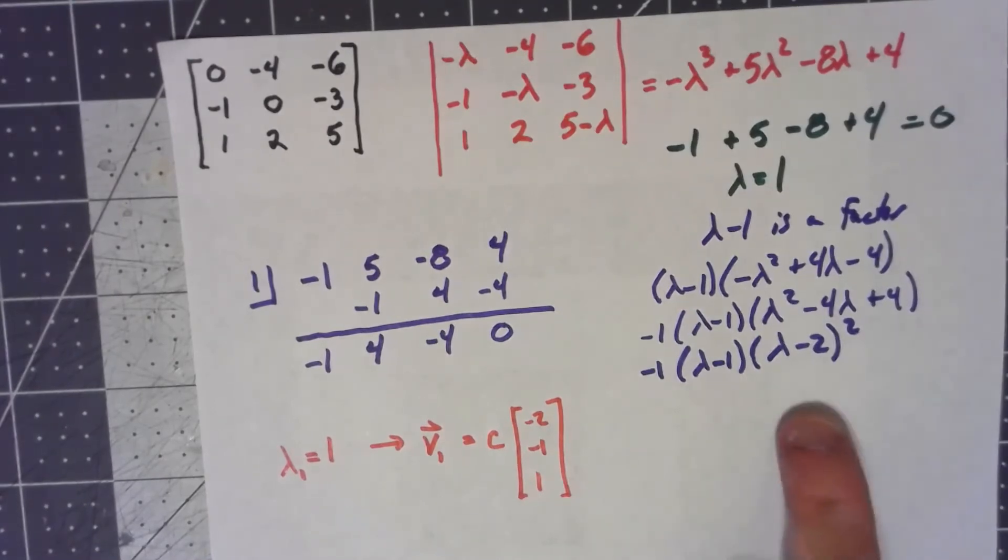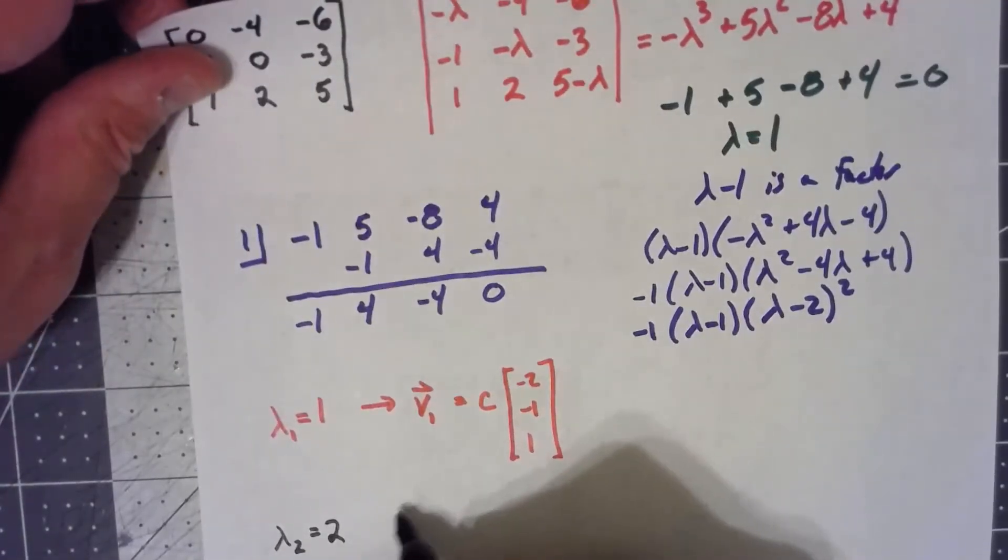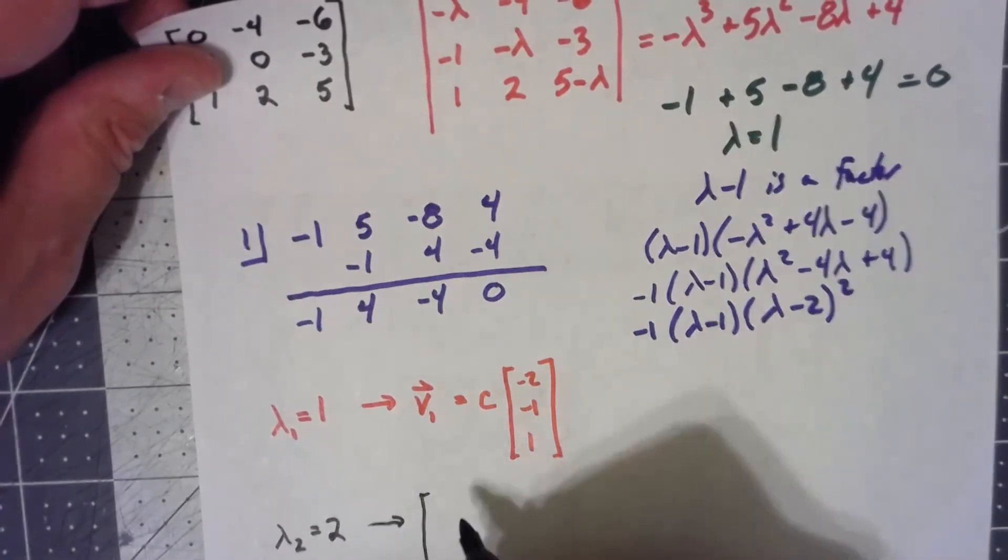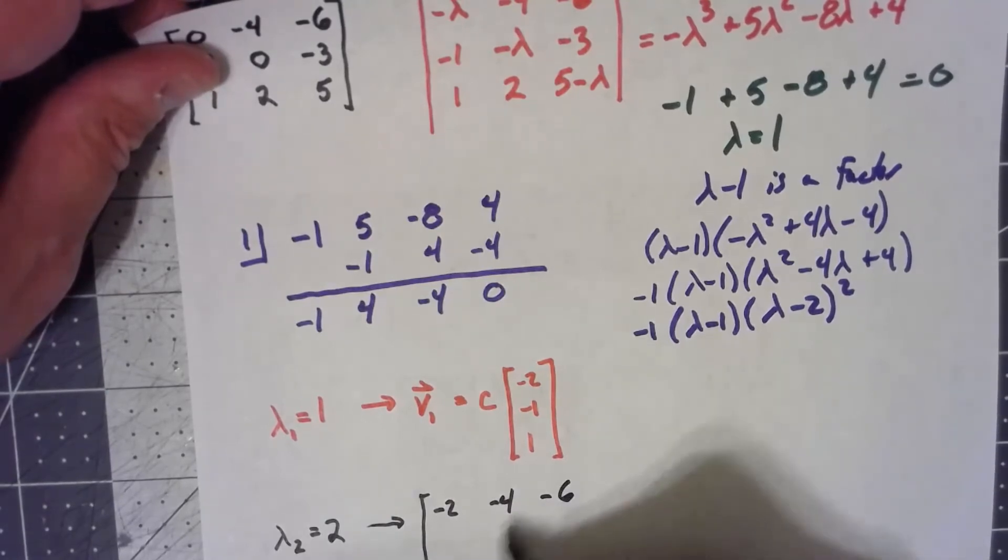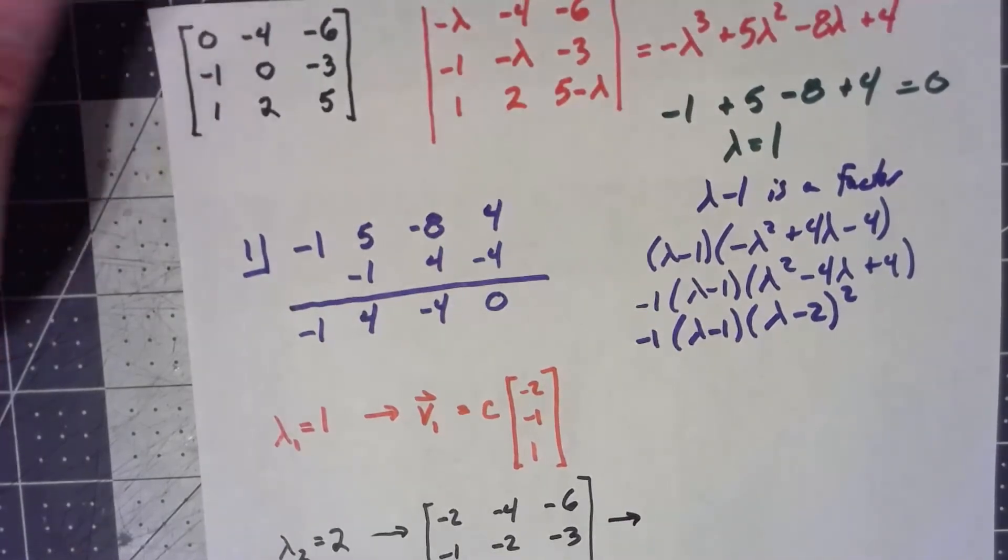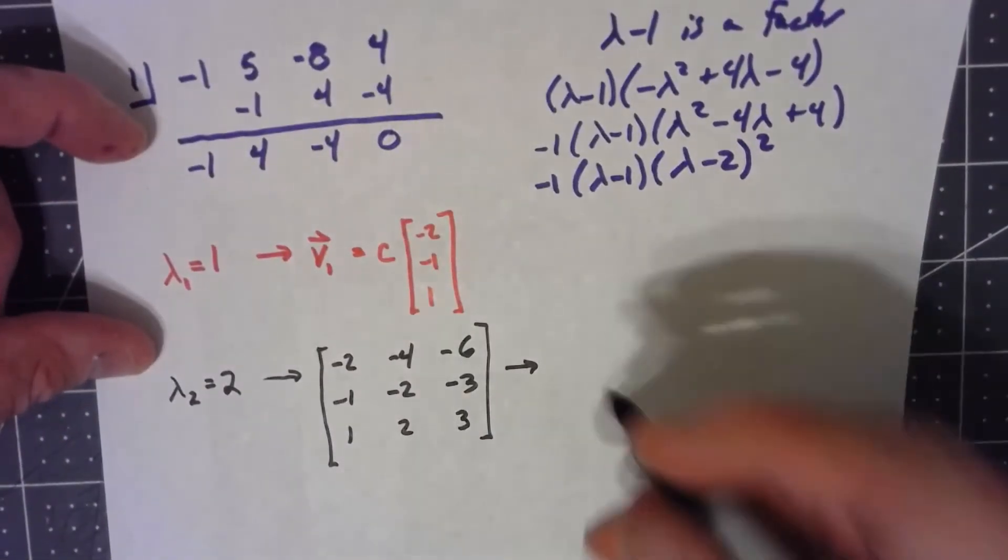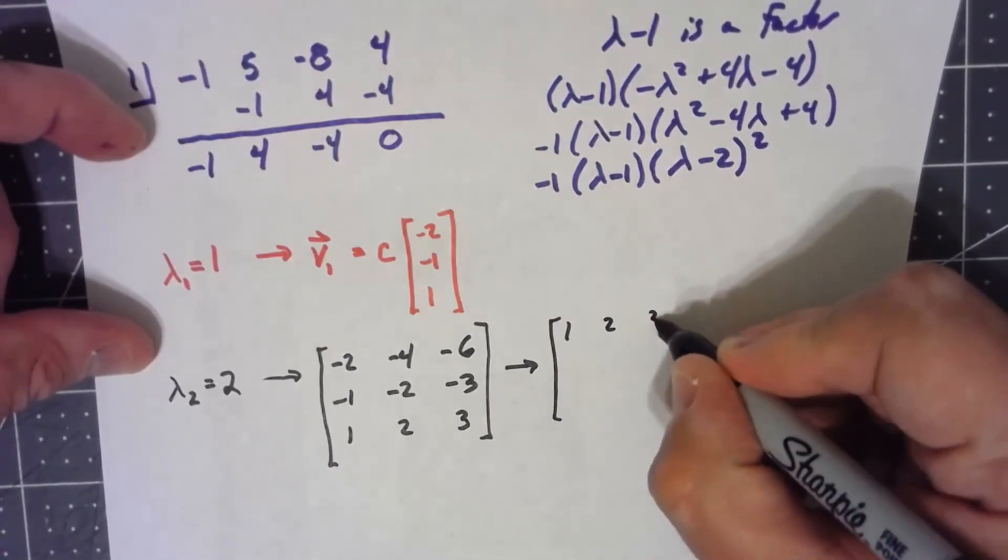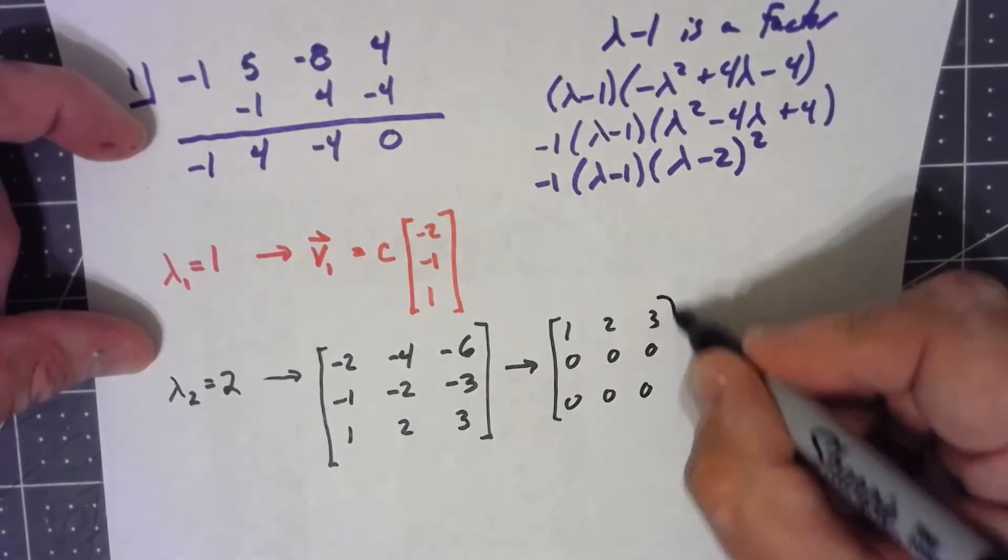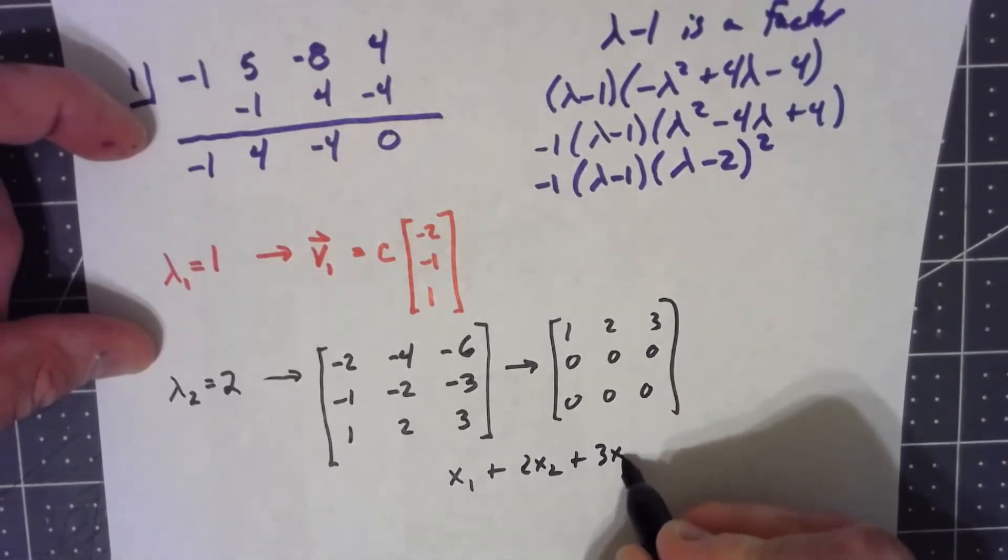Well, let's do the more interesting one. Let's do the one where lambda equals two. Let's actually do that one out. So if I put that in, I get the matrix negative two, negative four, negative six, negative one, negative two, negative three, one, two, three. Well, it doesn't take much to see that all those rows are linear or constant multiples of each other, so the matrix reduces to [1, 2, 3, 0, 0, 0, 0, 0, 0]. And there's only a single equation: x1 plus 2x2 plus 3x3 equals zero.